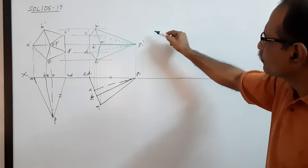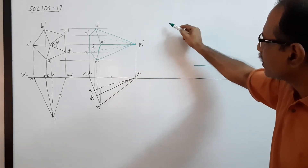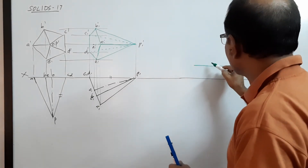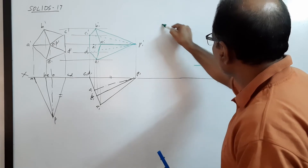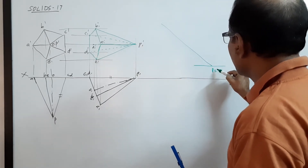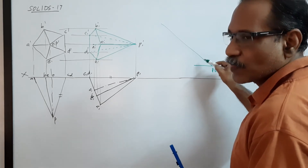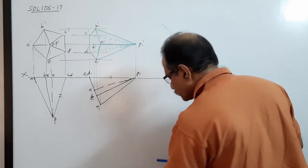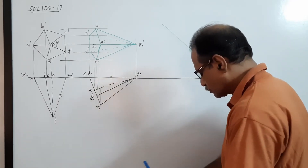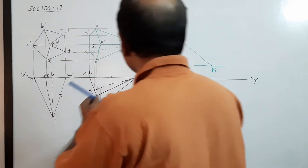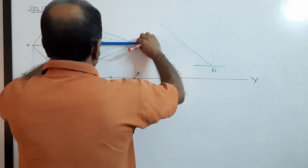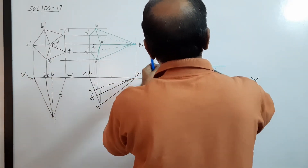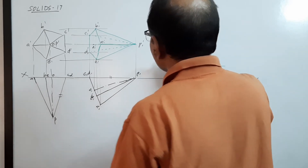Draw a horizontal line 15mm above XY — P2 dash should come on this line. If this side here makes 50 degrees to XY, this axis should make 90 minus 50 = 40 degrees to XY. So draw a 40 degree line here. This angle is 40 degrees. Take this distance and mark.